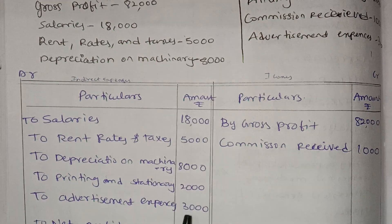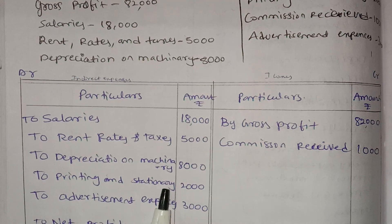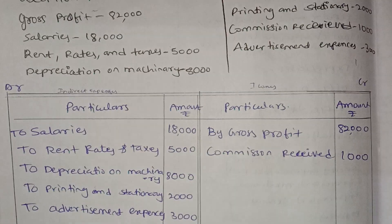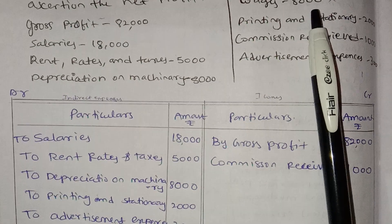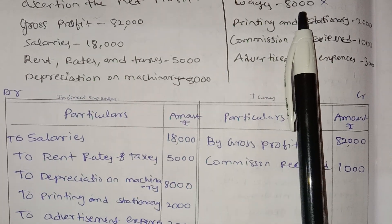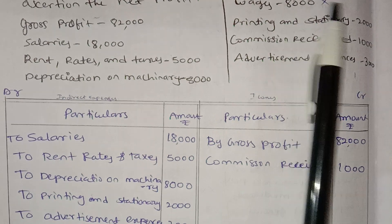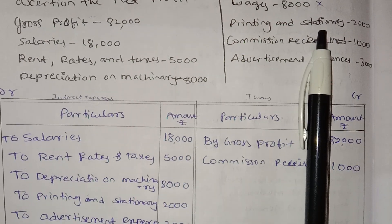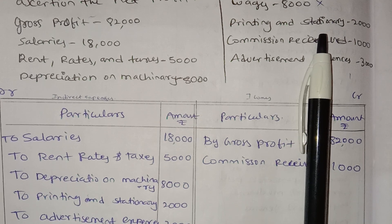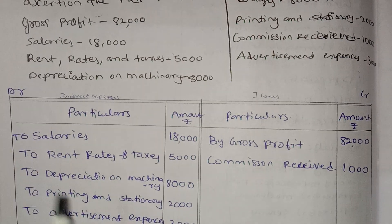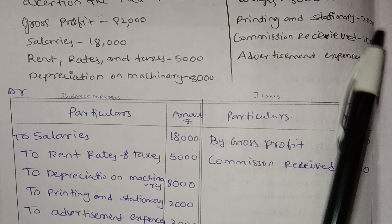18,000 is the depreciation of machinery. Wages — where did we go? Wages are direct expenses. The website is paid for the purchase pages, the printing and stationery. Indirect expenses go into the profit and loss account on the debit side. Then we have printing and stationery in 2008.